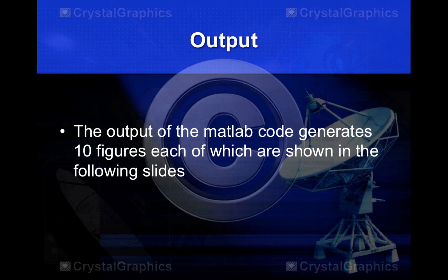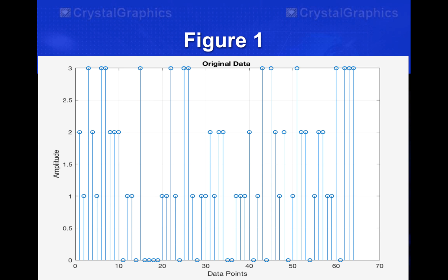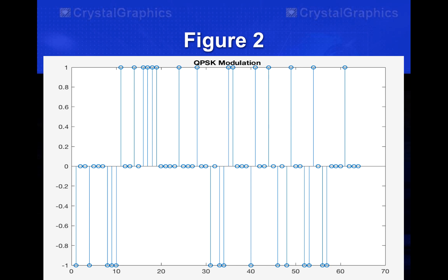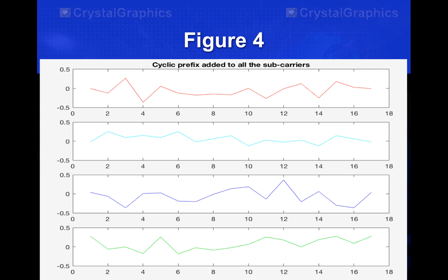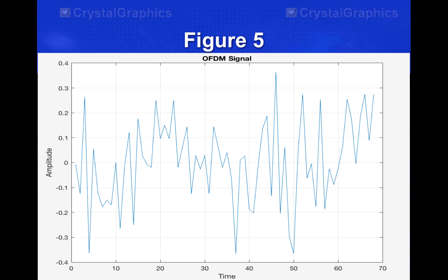The MATLAB code generated 10 figures, each shown in the following slides. The first is the original input data. After QPSK modulation, this is the output. When IFFT is done on all the subcarriers, this is the output for the four subcarriers. The cyclic prefix is then added to all subcarriers, and finally the OFDM signal at the transmitter end is generated.